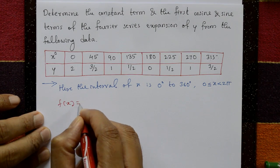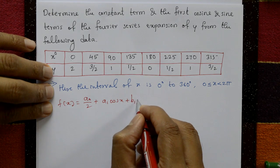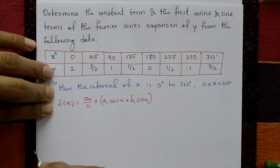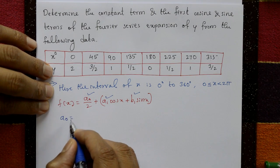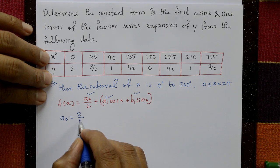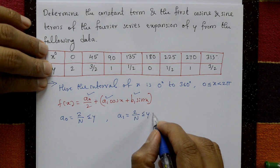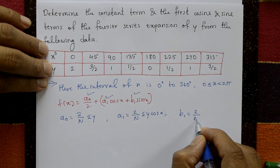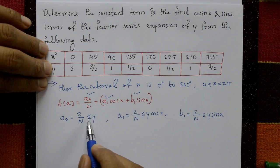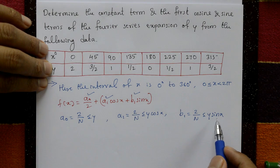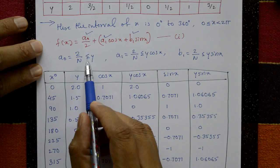The first harmonic is: f(x) = a₀/2 + a₁·cos x + b₁·sin x. We require a₀, a₁, and b₁. The formulas are: a₀ = (2/N)·Σy, a₁ = (2/N)·Σ(y·cos x), and b₁ = (2/N)·Σ(y·sin x). Now we construct a table to find Σy, Σ(y·cos x), and Σ(y·sin x).